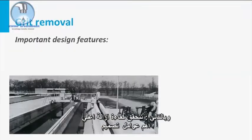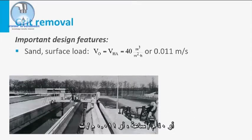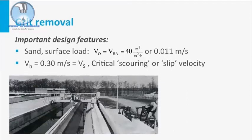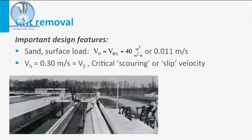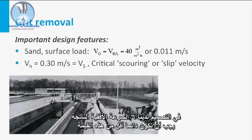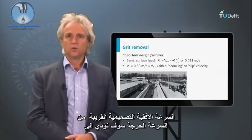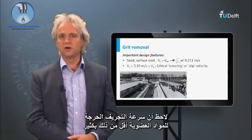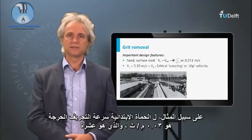The most important design features of a rectangular grit chamber are: first, the maximum hydraulic surface load, or Hazen velocity, should be below 40 cubic meters per square meter per hour, or 40 meters per hour, or 0.011 meters per second. Second, the critical horizontal velocity that may lift the sand from the bottom is 0.3 meters per second — this is called the critical scouring velocity or slip velocity. The resulting horizontal velocity must always be below this value. A design horizontal velocity close to the critical velocity will result in an excellent separation of sand particles from the organic fraction. Note that the critical scouring velocity of organic material is much lower — for primary sludge, it is 0.03 meters per second, which is 10 times less.